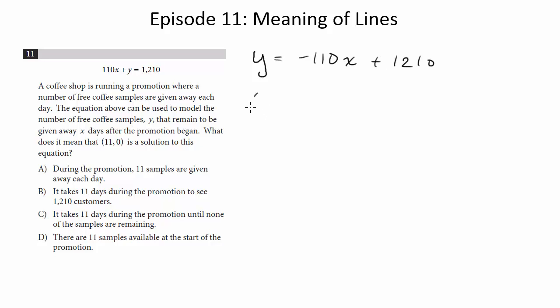So now they're telling us that 11, 0 is a solution. Let's define what these coordinates mean based on what the problem says. So the x-coordinate is the number of days after the promotion began. Now what about y? y is the number of coffee samples that remain to be given away. So basically, it's how many coffee samples they have left. So number of coffee samples left.